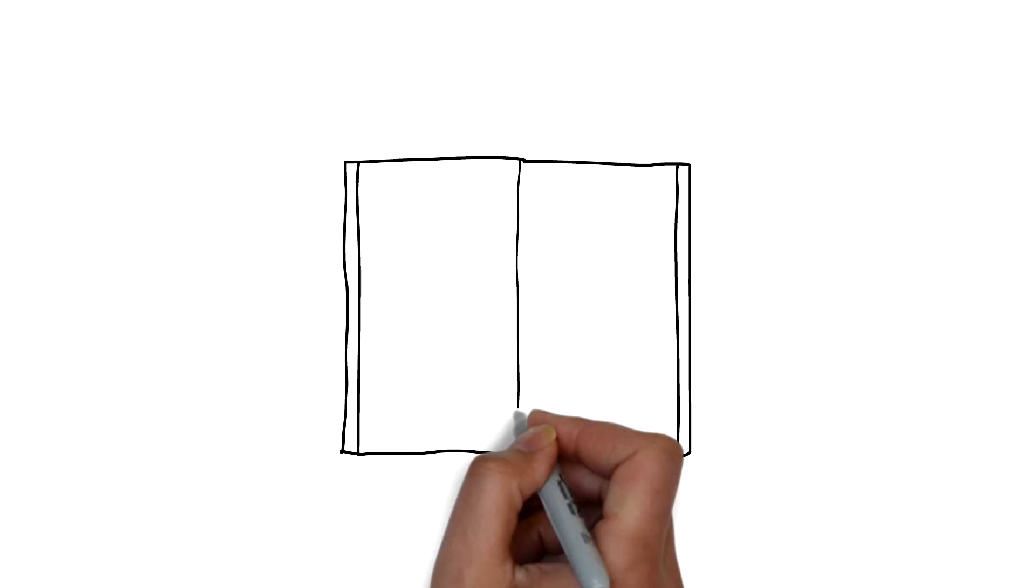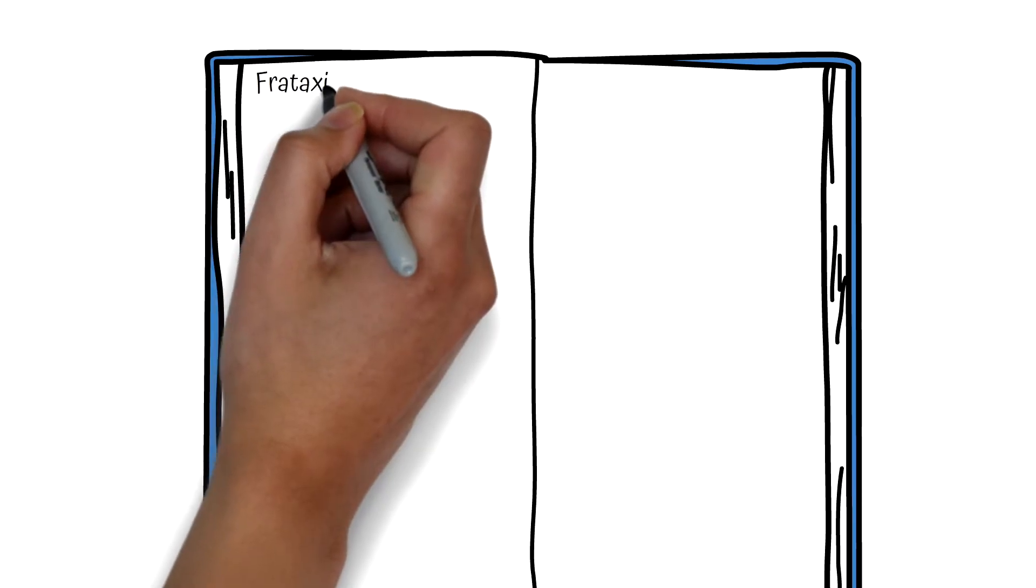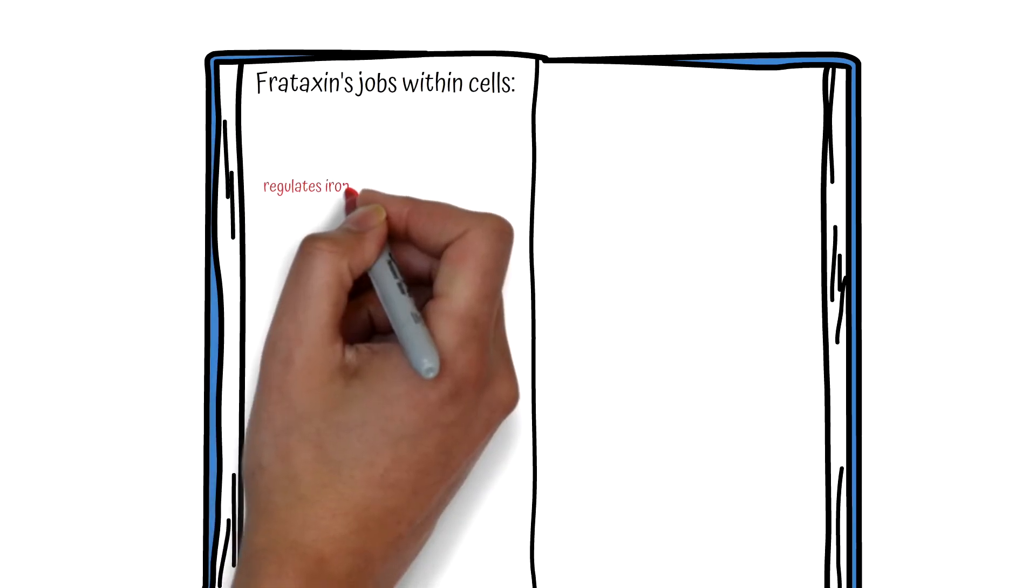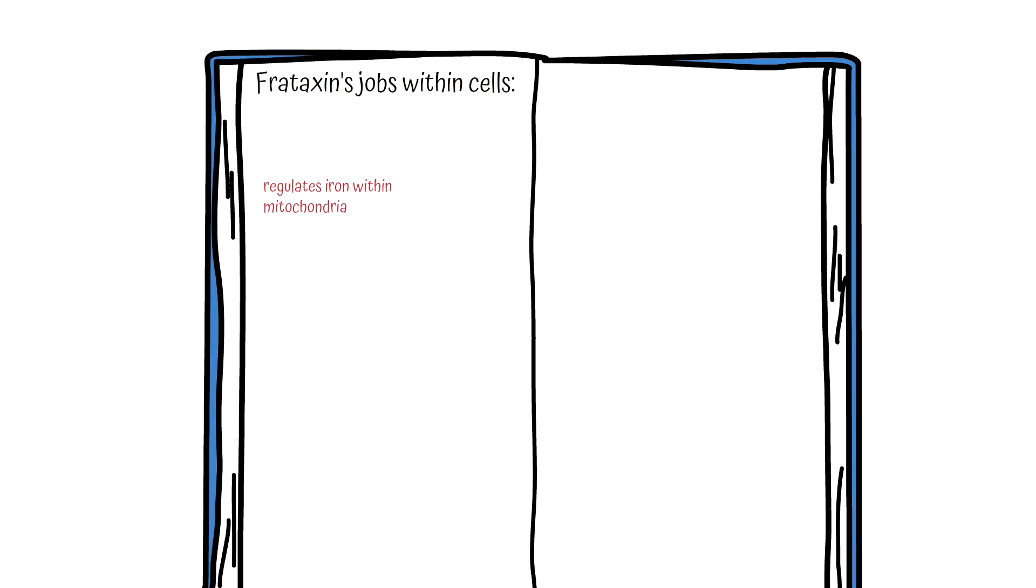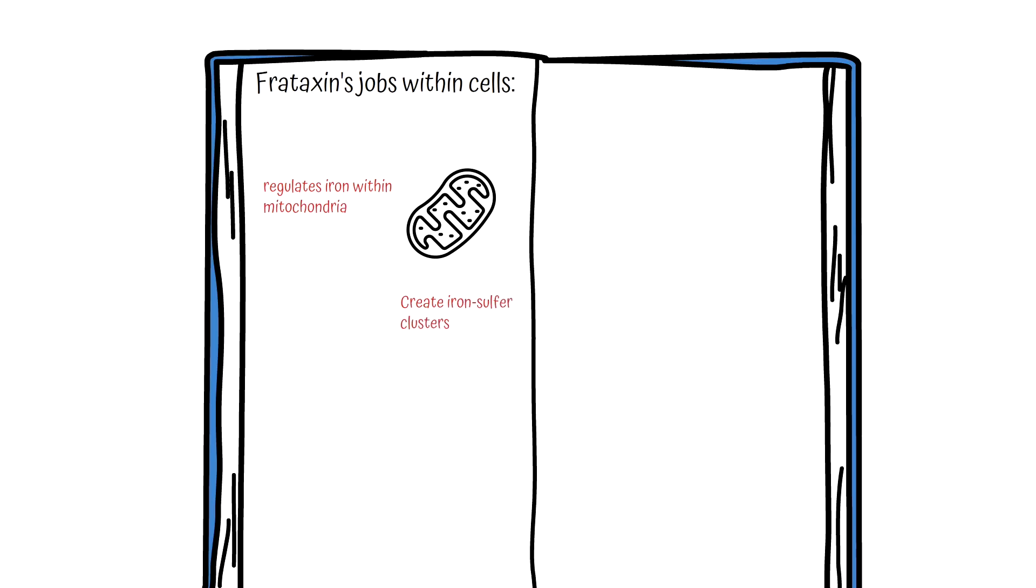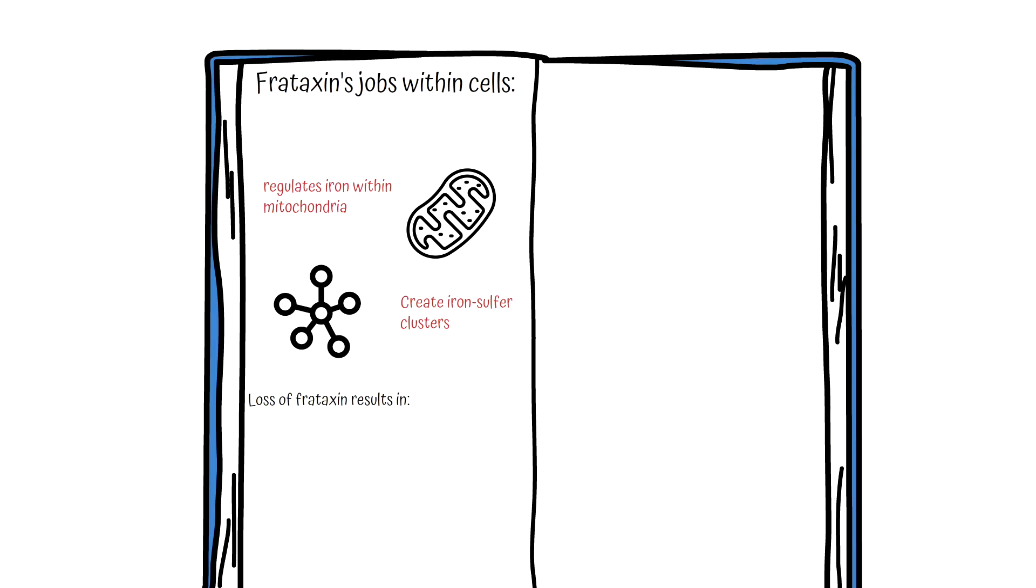In the last Minutes of Science episode, we learned about frataxin and what it does within the cell. We learned that frataxin plays an essential role in managing iron within the mitochondrion, helping to generate specific complexes of iron and sulfur called iron-sulfur clusters.